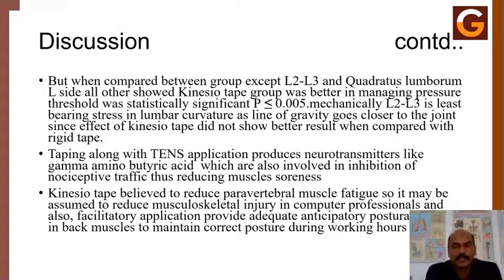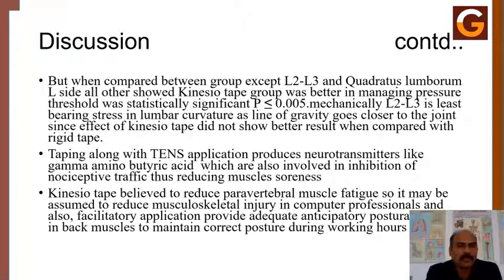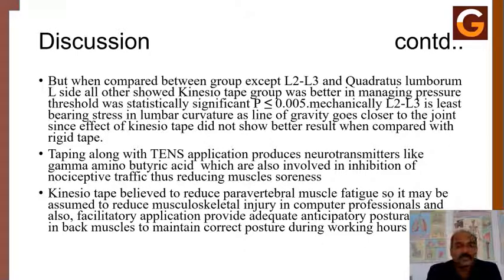Mechanically, L2–L3 experiences the least varying stress in lumbar curvature as the line of gravity passes closer to that joint, which may explain why kinesio tape did not show a better result than rigid tape at that level. The taping along with pain modulation produces neurotransmitters like gamma-aminobutyric acid (GABA), which are involved in inhibition of nociceptive traffic, thus reducing muscle soreness. Kinesio tape is also believed to reduce paraspinal muscle fatigue, reducing musculoskeletal injury risk and facilitating adequate anticipatory postural control in back muscles to maintain correct postures during working hours.